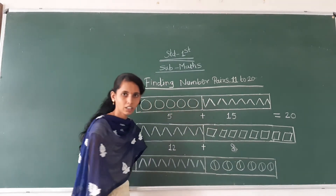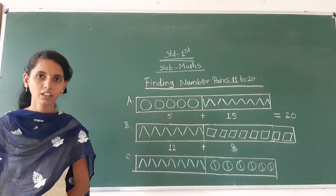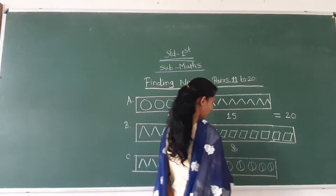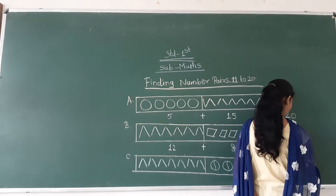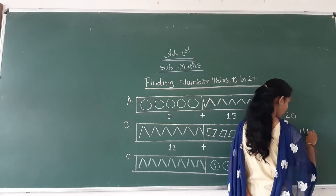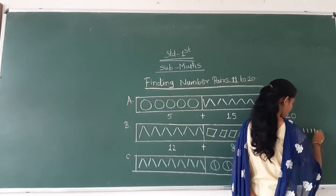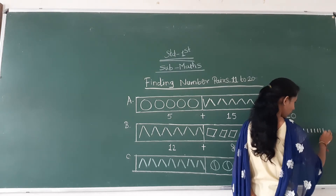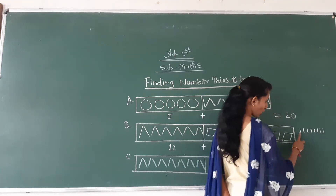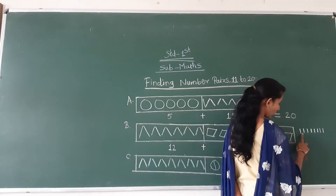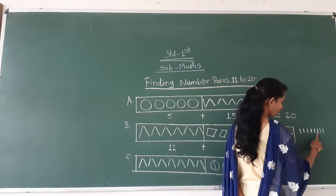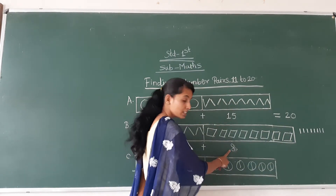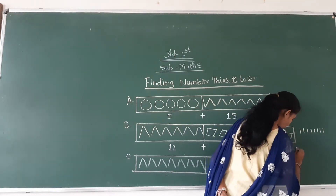How many? How many do I want to say it? 12. Then 13, 14, 15, 16, 17, 18, 19, 20. How many like here? 1, 2, 3, 4, 5, 6, 7, 8. How many? Eight. Is equal to how many? 20.